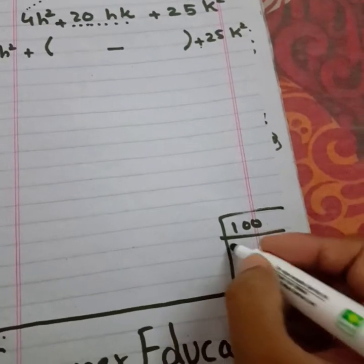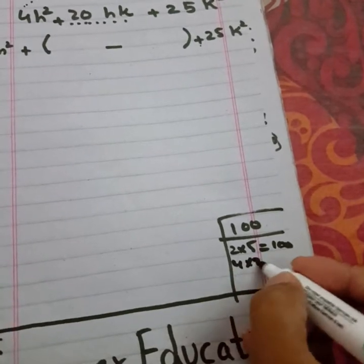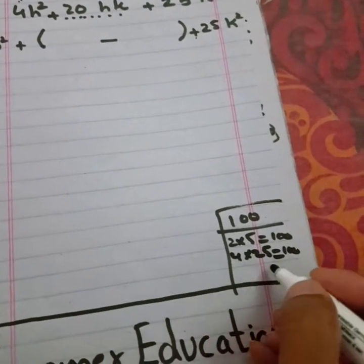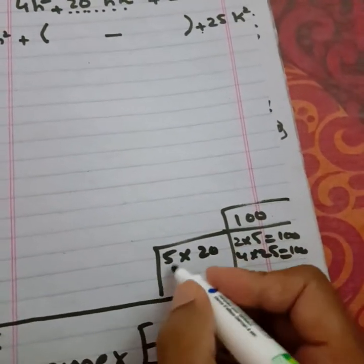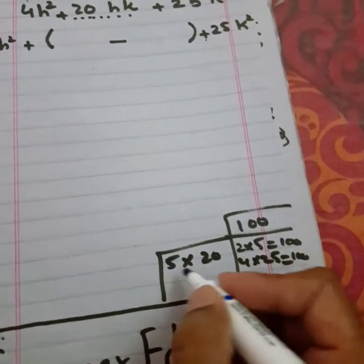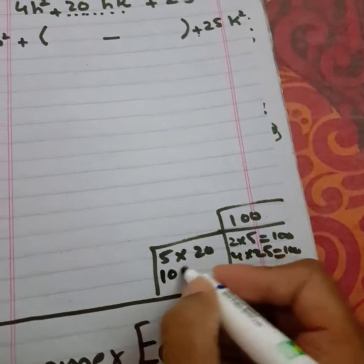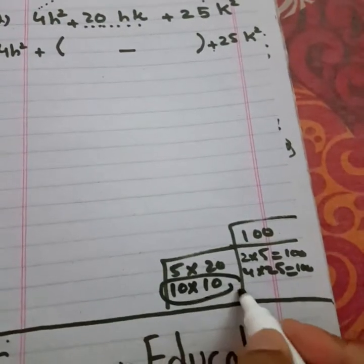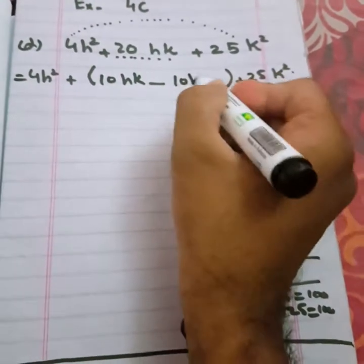By adding this, I will get 20. Now I'll try to complete my lecture in a hurry because timing is short. 10hk, and this plus sign will not affect the sign inside the bracket: 10hk + 25k².